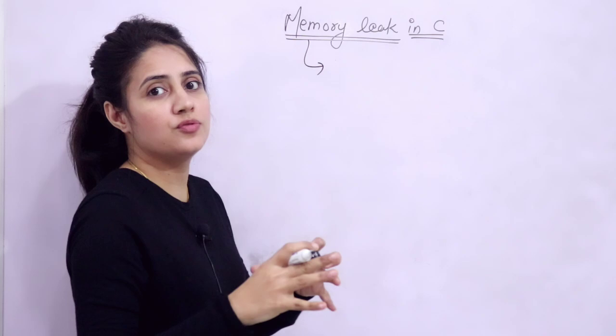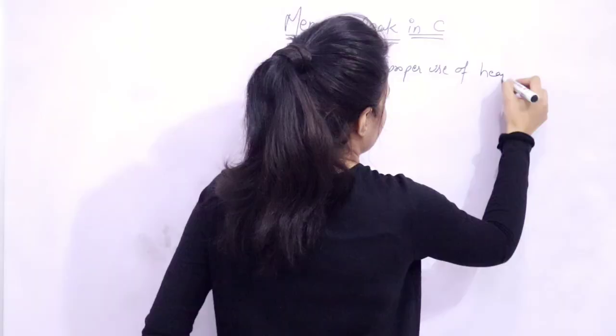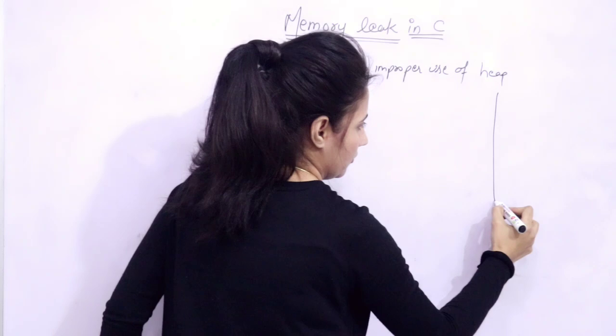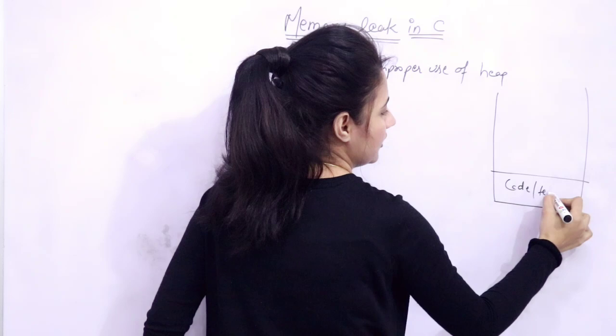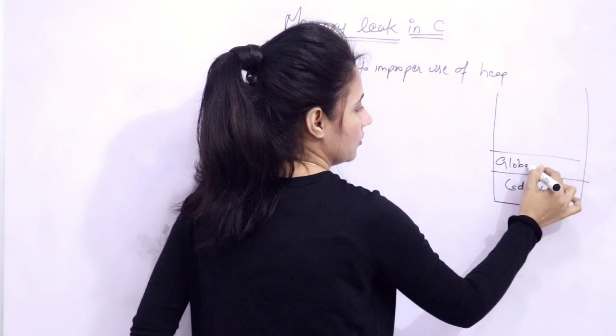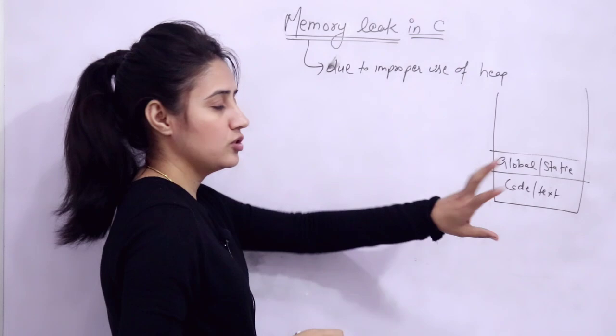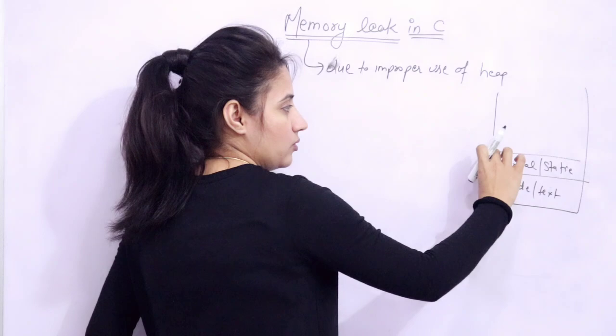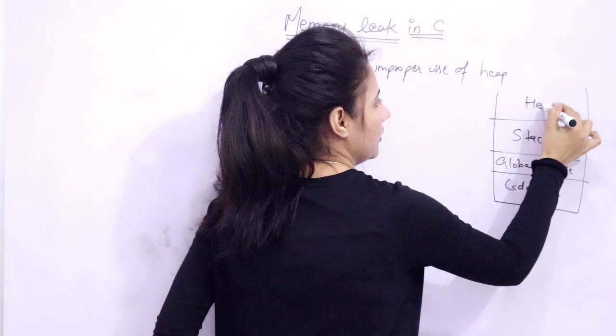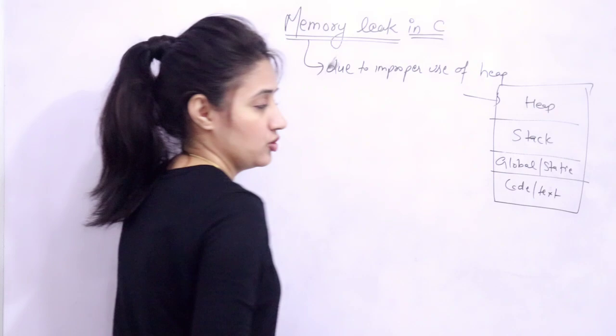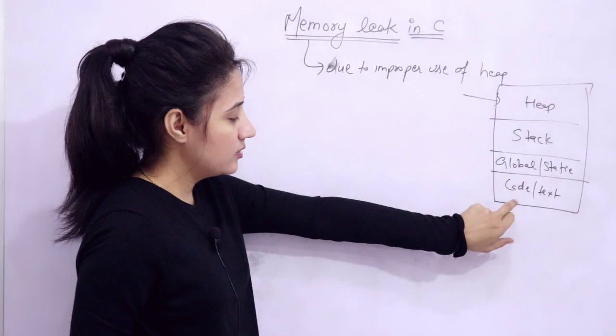Memory leak is a problem in C and C++ which occurs due to improper use of dynamic memory, or improper use of the heap section. When we run a program, the memory layout has four segments: one for code or text, one for global and static variables, one is stack, and one is heap. Whenever you dynamically allocate memory, it is allocated from the heap section, while static memory allocation comes from the stack section.